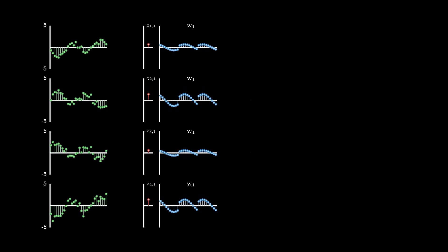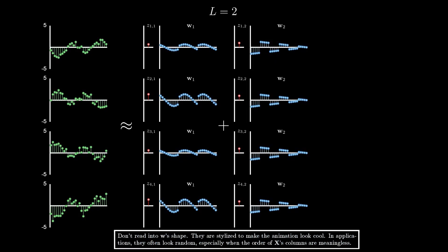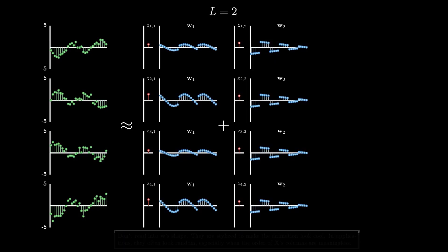But this may not be flexible enough. So, we allow ourselves to add in another version of this. In general, we can keep adding these in, and that will increase the number of parameters. The number of these that we add up is a hyperparameter of our model that we'll call L. In this example, L equals 2.